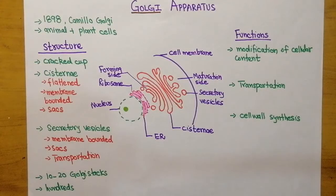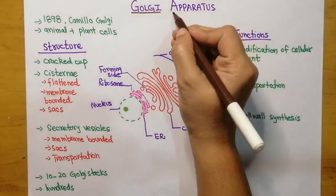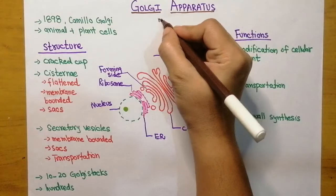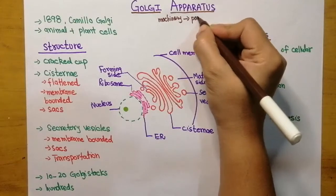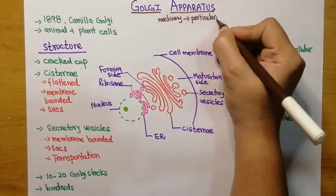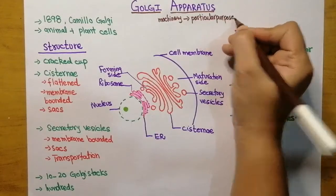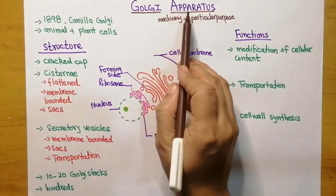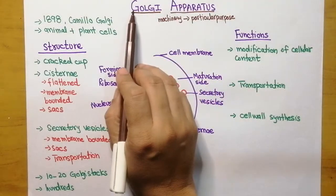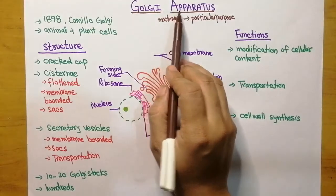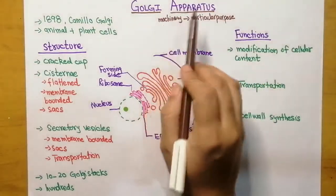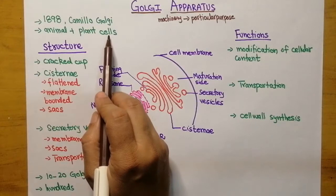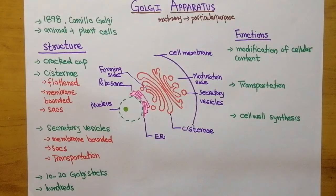To honor that scientist, the word 'Golgi apparatus' is used. Apparatus is any machinery which is used for a particular function or purpose. In other words, the Golgi apparatus is a machinery discovered by Camillo Golgi, used to perform a particular function. The Golgi apparatus is found in both animal as well as plant cells, meaning it is an organelle present in eukaryotic cells.